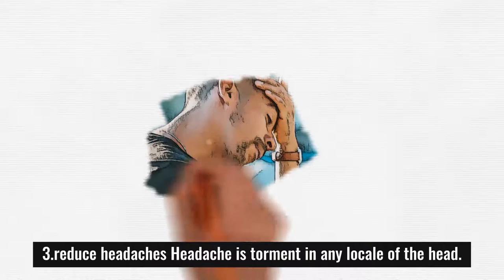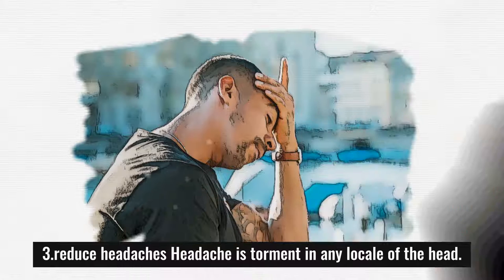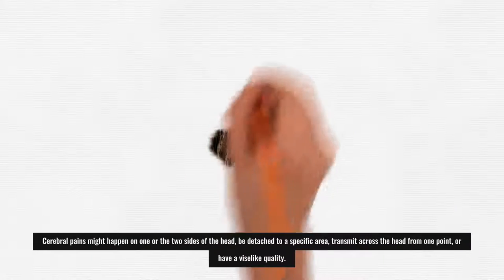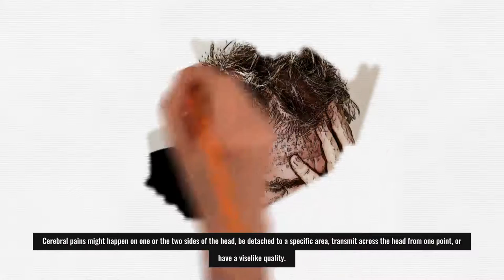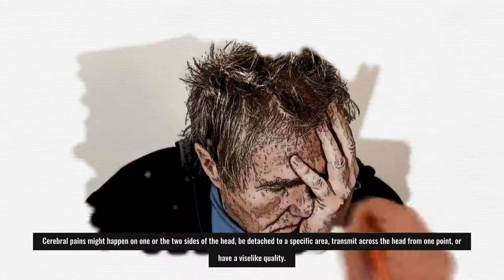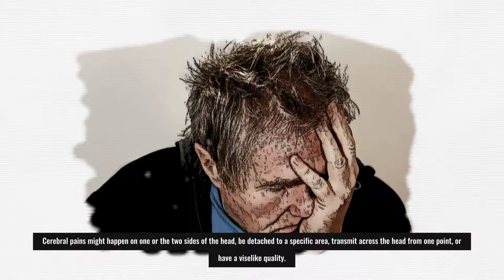3. Reduce Headaches: Migraine is torment in any locale of the head. Cerebral pains might happen on one or the two sides of the head, be detached to a specific area, transmit across the head from one point, or have a vice-like quality.